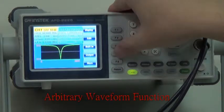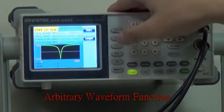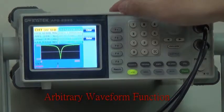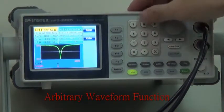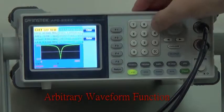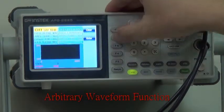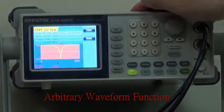Press output, then length, and enter 4096. Press enter to set 4K point memory depth output.